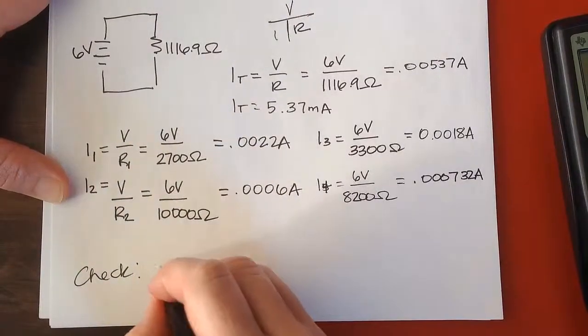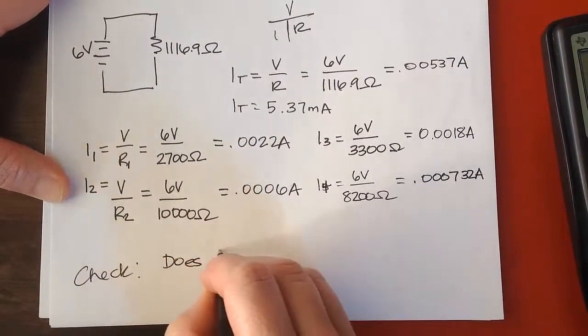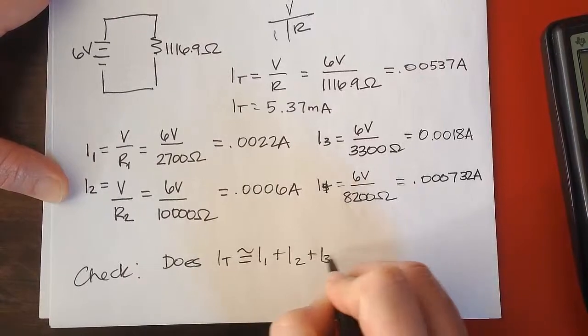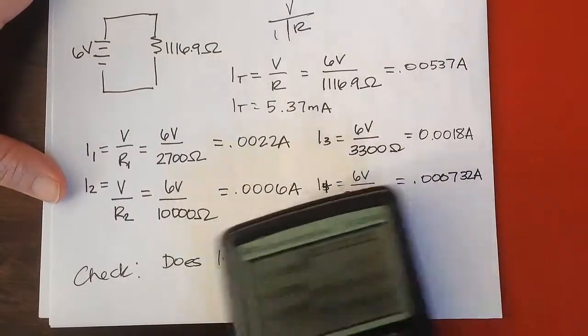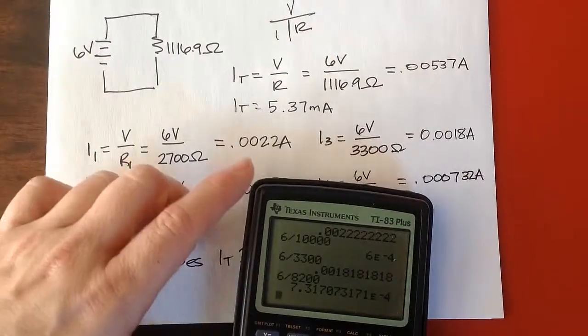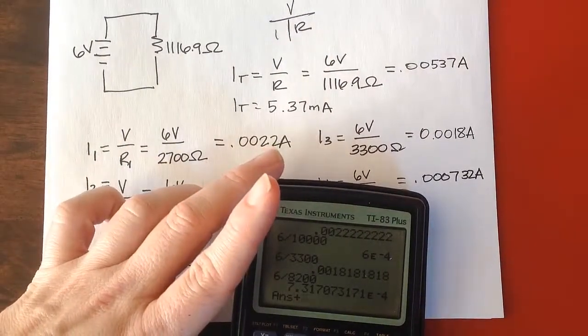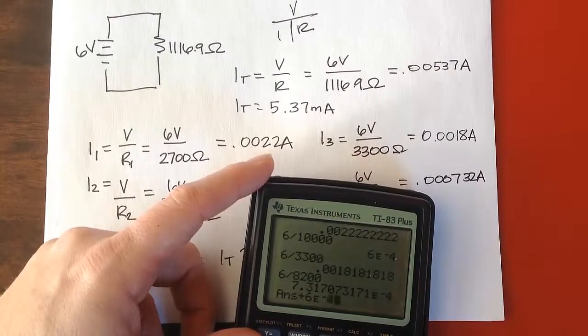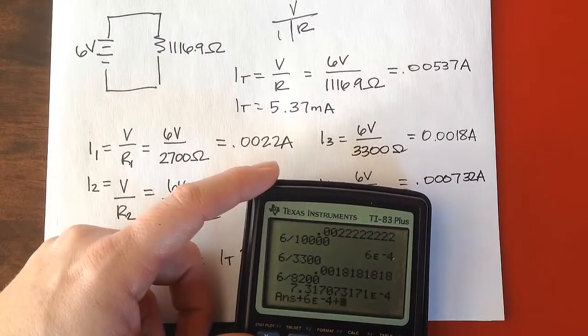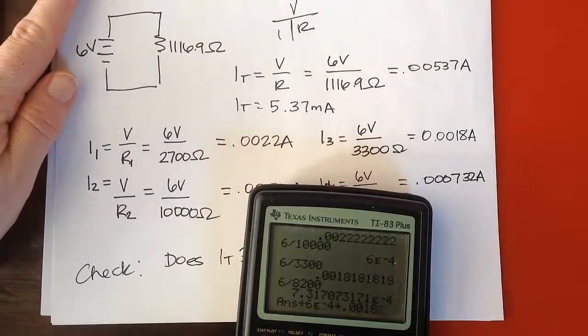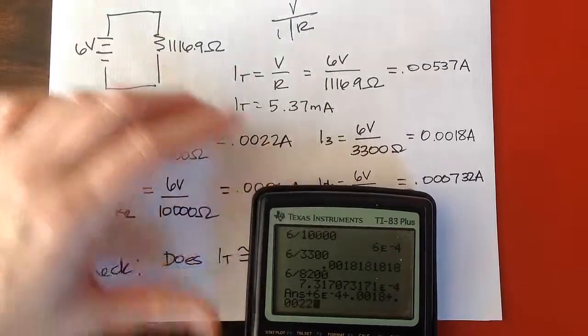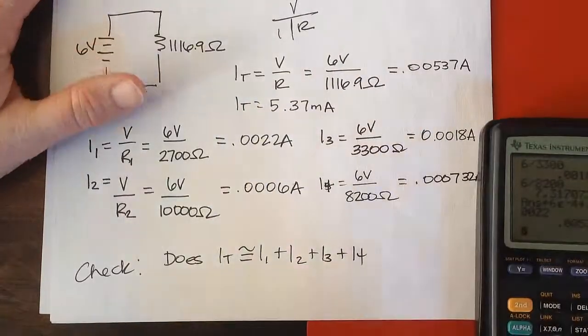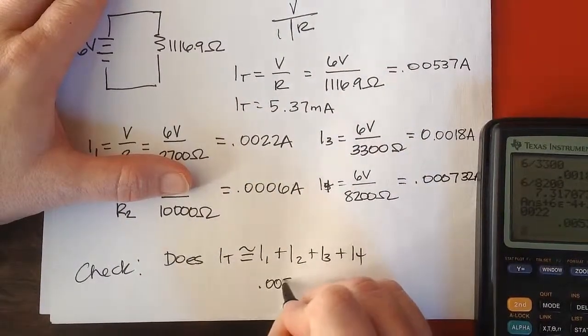When I add them up, is it approximately I1 plus I2 plus I3 plus I4? I'm going to go back to the numbers I had. So 0.0022 plus 6 times 10 to the minus 4 plus 0.0018 plus 0.00732. I get, you can see, 0.00533.